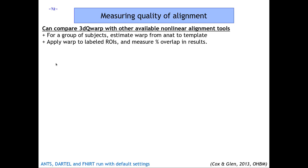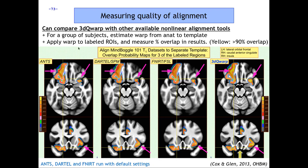How do we compare 3dQwarp, the AFNI workhorse for nonlinear alignment, with other tools? We can take a group of subjects, estimate the warp from anatomical to template for each, use those transforms to warp a specific ROI into standard template space, and see how overlap compares. Here's an example from an OHBM poster comparing nonlinear alignment results for ANTs, DARTEL, the FSL program, and 3dQwarp. Yellow means the highest alignment — hot colors indicate large fractional overlap of the ROIs. 3dQwarp has a lot of yellow throughout, probably the most of all, though all programs show reasonably consistent results.